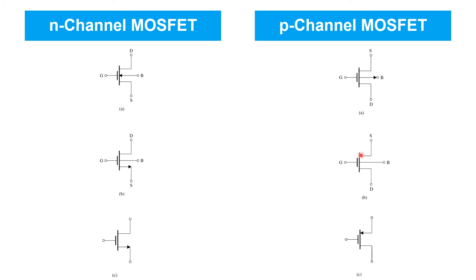Current flowing into the source indicates a p-channel transistor; current flowing out of the source indicates an n-channel transistor. The last symbols look just like the second ones except the body terminal is omitted to simplify the schematic. We'll most often use these because we'll normally connect the body terminal — either short it to the source, or connect it to voltages that keep reverse bias across all p-n junctions in the MOSFET structure. For an n-channel transistor, that means connecting the body to the lowest voltage in the circuit, whereas for a p-channel transistor, the n-type body must be connected to the highest voltage in the circuit to ensure all depletion regions remain intact.